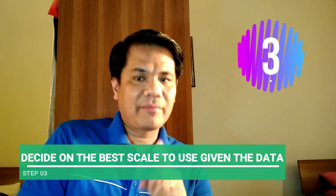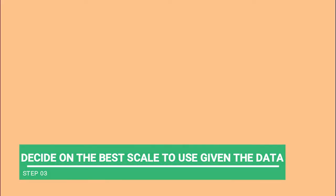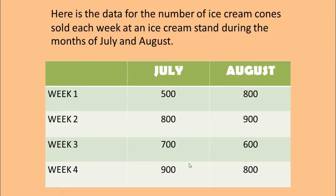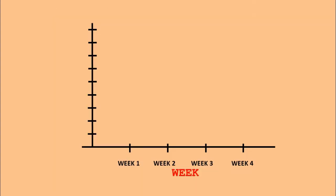Step number three: decide on the base scale to use given the data. As you notice, the lowest number is 500 and the highest number is 900. The base scale is multiples of 100, so we have from 100 to 900.